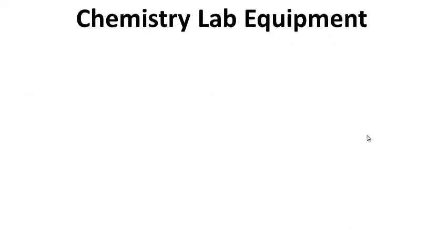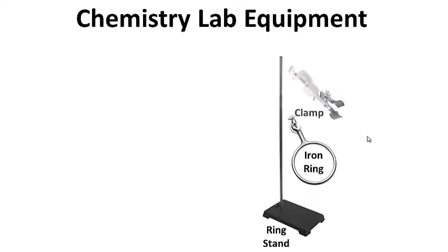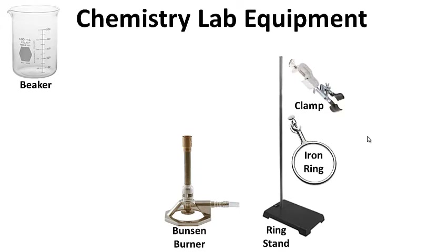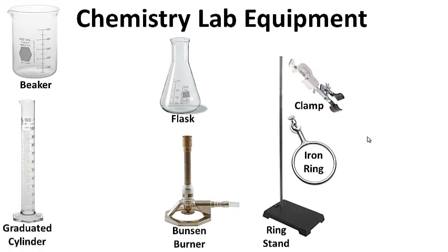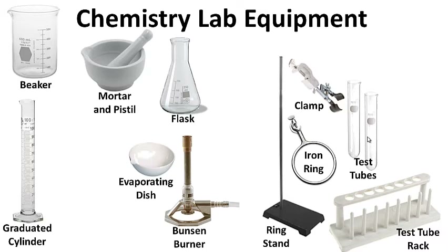Chemistry lab equipment — feel free to pause this any time. We're going to go over the equipment used in chemistry lab. You have a ring stand, an iron ring, a clamp, a beaker, a Bunsen burner, a flask, a graduated cylinder, test tubes, an evaporating dish, and a mortar and pestle.